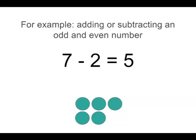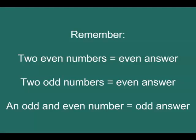You can try a few examples yourself to confirm these rules if you like. Remember: two even numbers added or subtracted equals an even answer. Two odd numbers added or subtracted equals an even answer. And an odd and an even number added or subtracted equals an odd answer.